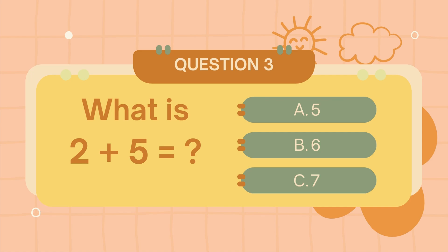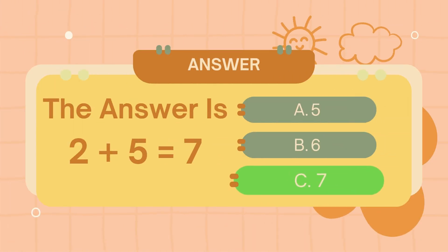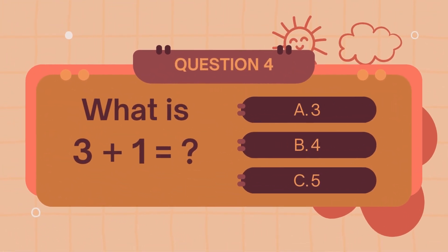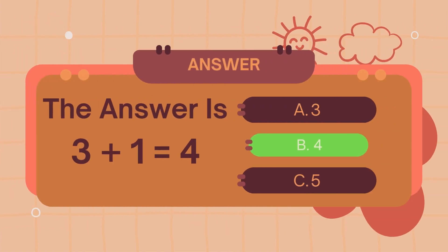What is 2 plus 5? The answer is 7. What is 3 plus 1? The answer is 4.